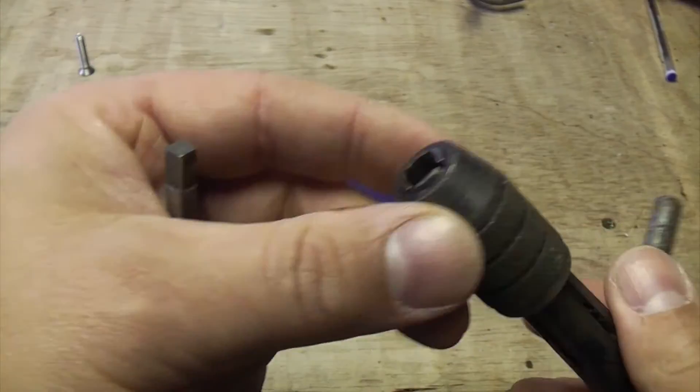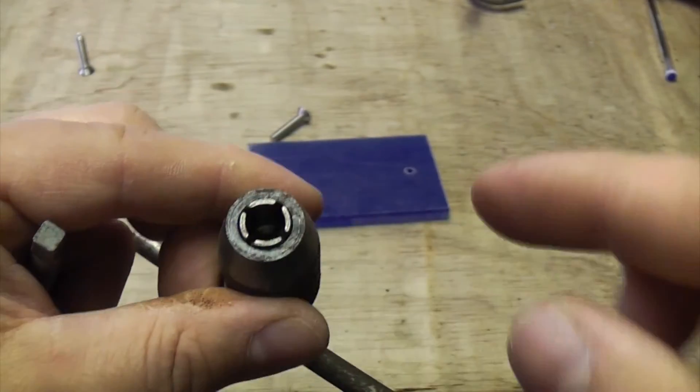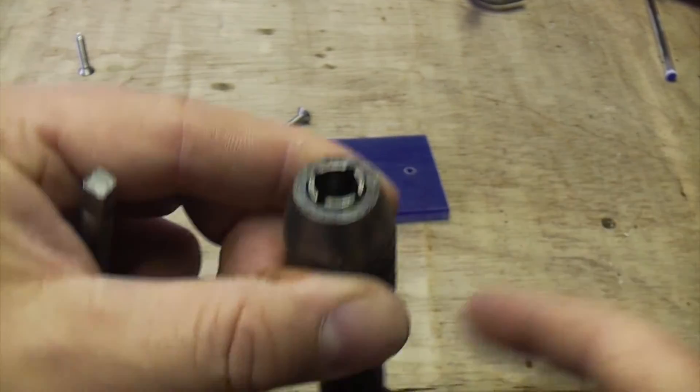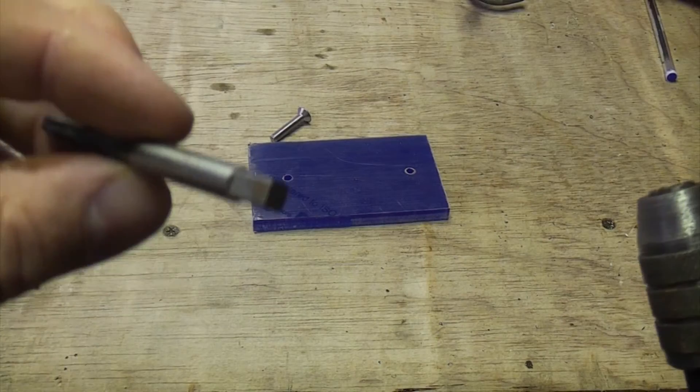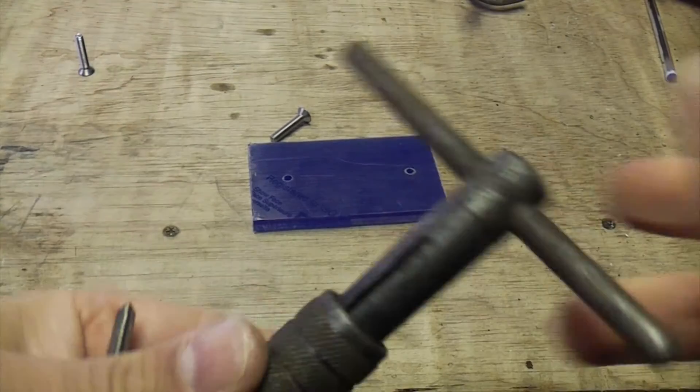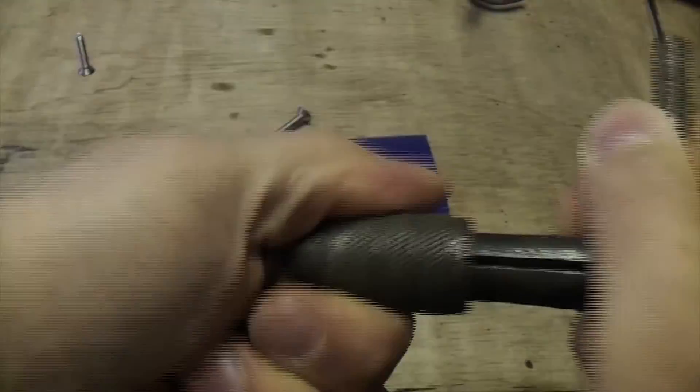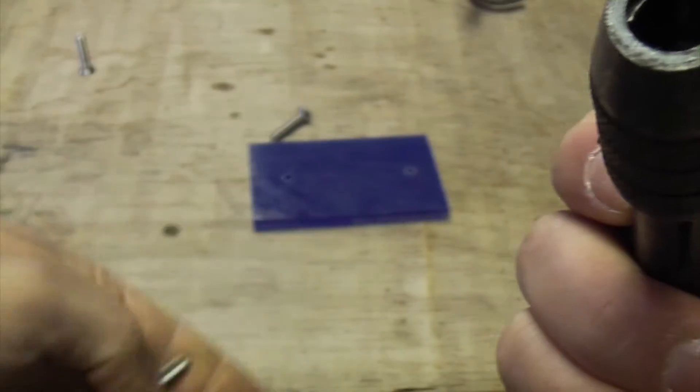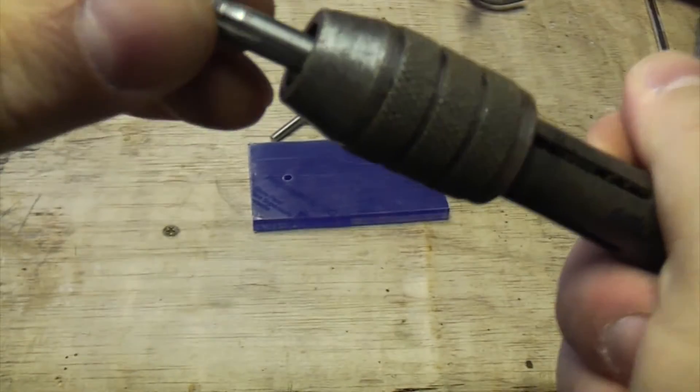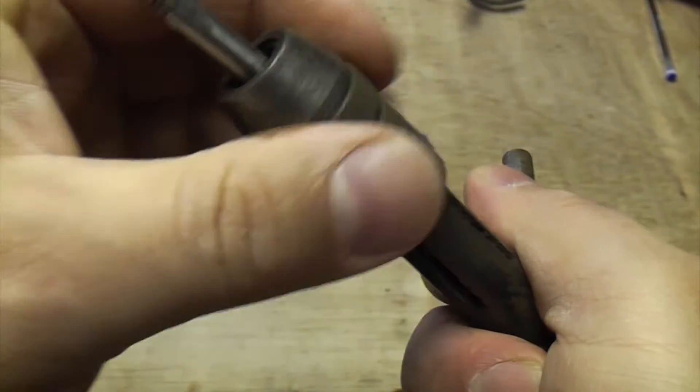You can get a few different kinds of tap wrench and they all have a square on the end to grip that square. This particular one is a T-bar type. I'll just open that up and push the tap in and then just tighten it.